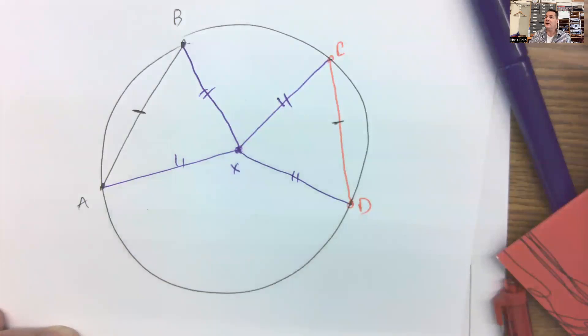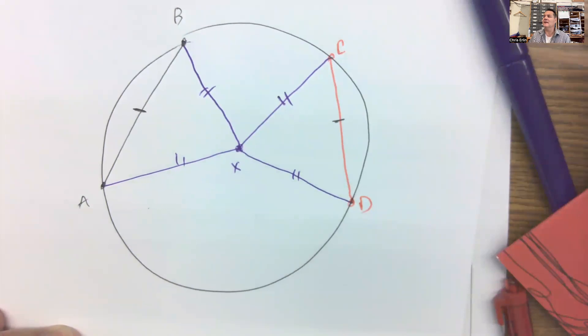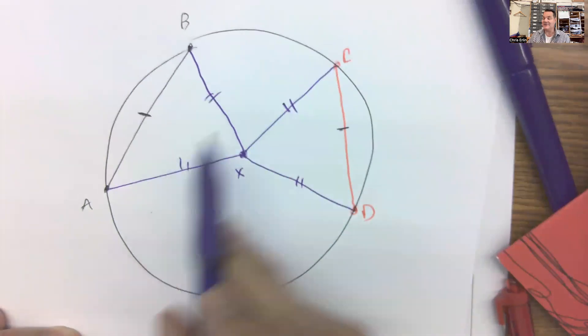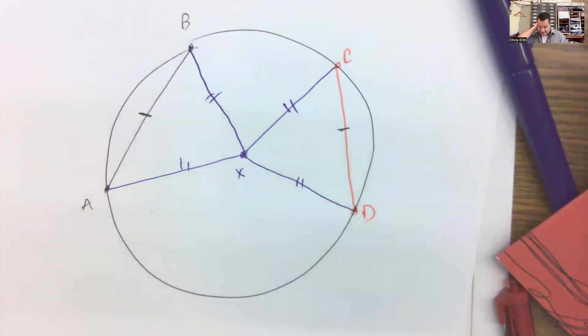So what can we say about these two triangles? They are congruent. Why? I like someone else's three-letter justification. Side, side, side, right? We've got two sides and a third side. So these two triangles are congruent because of side, side, side.